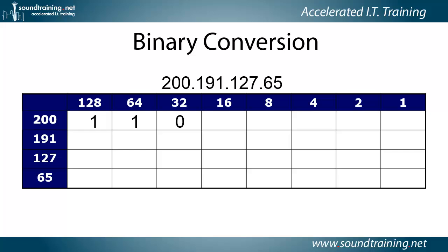What goes in the 16's column? If you said a 0, you'd be right — we're still dealing with a remainder of 8. Can we subtract 8 from 8? Sure. So we put a 1 in the 8's column, and that leaves a remainder of 0, so we put a 0 in each of the three remaining columns.